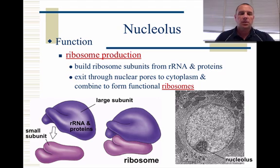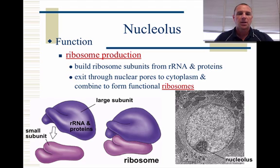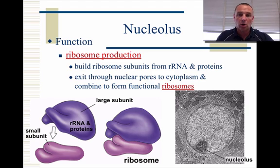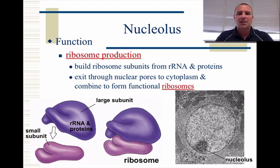A particular region, the nucleolus — you can see it down here in the picture — is the site of ribosome production. Basically, it is built by subunits of ribosomal RNA, which I hope you remember, and proteins. They're put together, and they leave the nucleus through the nuclear pores and assemble themselves, oftentimes in the cytoplasm itself.